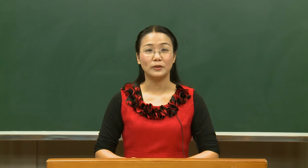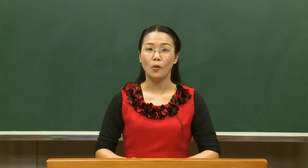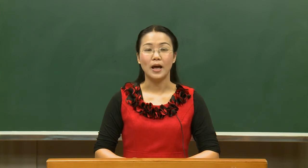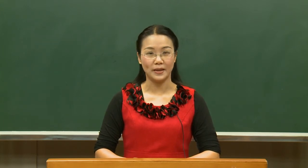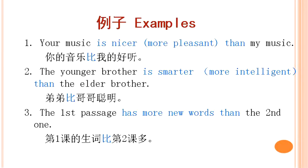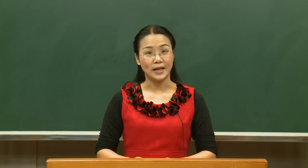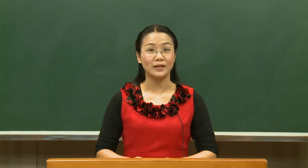Different from the comparative form in English, Chinese adjectives do not take the suffix -er or the modifying words 'less' or 'more', and they always appear at the end of the sentence. For instance, 'your music is nicer or more pleasant than my music.' In Chinese: 弟弟比哥哥聪明 (the younger brother is smarter than the elder brother); 第一课比第二课生词多 (the first passage has more new words than the second one). The syntax of 比字句 is easily mastered due to the simplicity of the adjectives.